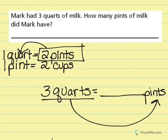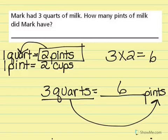If each quart has 2 pints, then I just do 3 times 2, which gives me 6. So Mark would have 6 pints of milk.